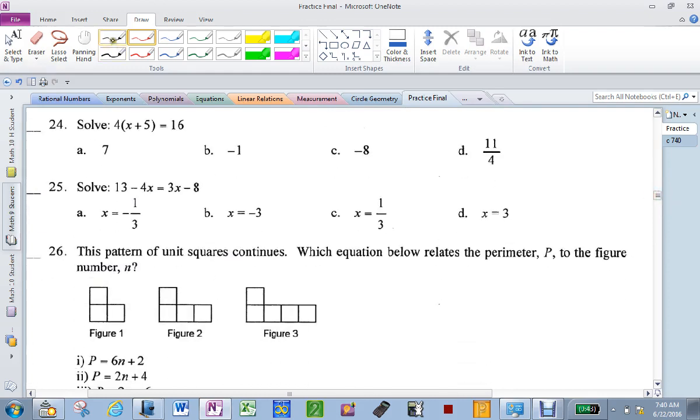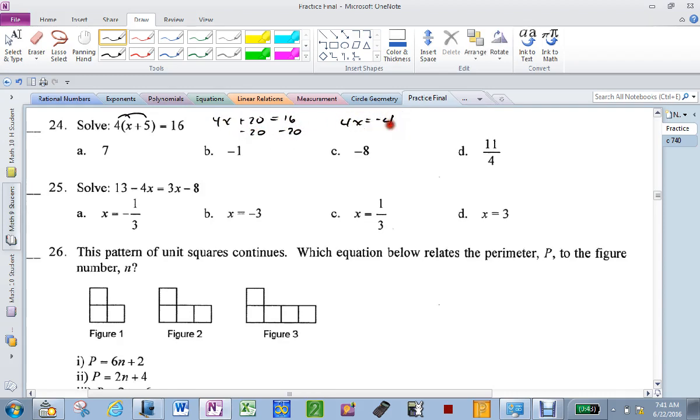Solve this. Let's distribute. 4x plus 20 equals 16. Minus 20, minus 20. 4x equals negative 4. Divide by 4. x equals negative 1.